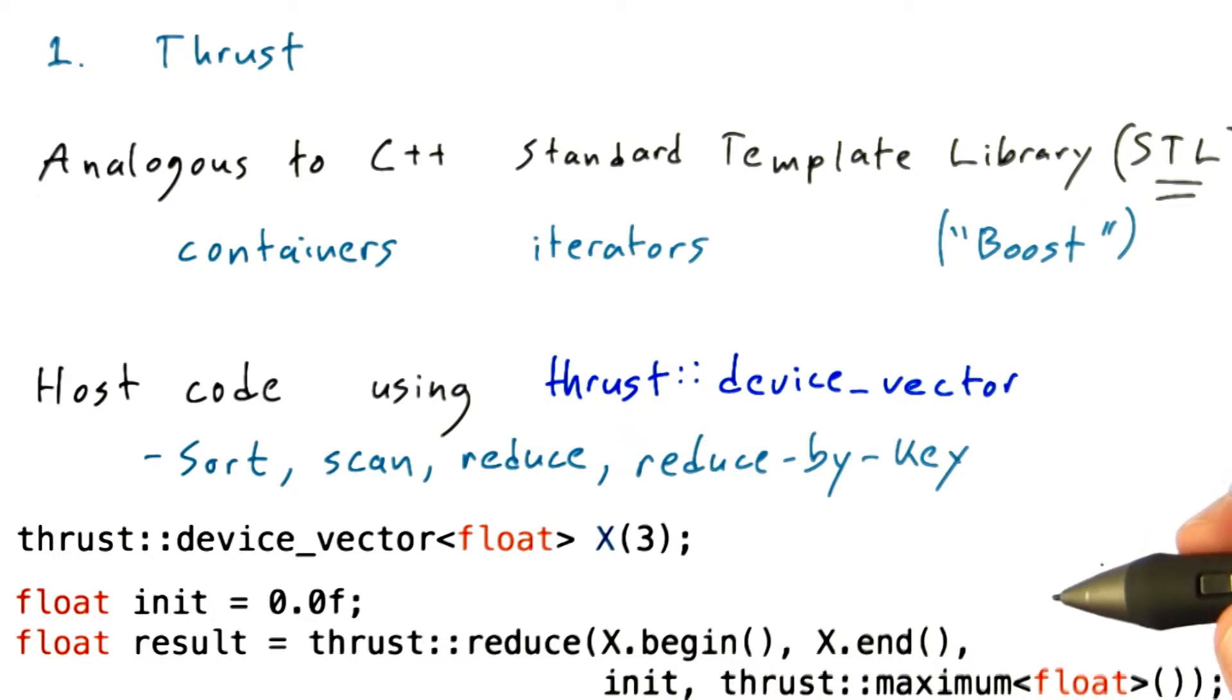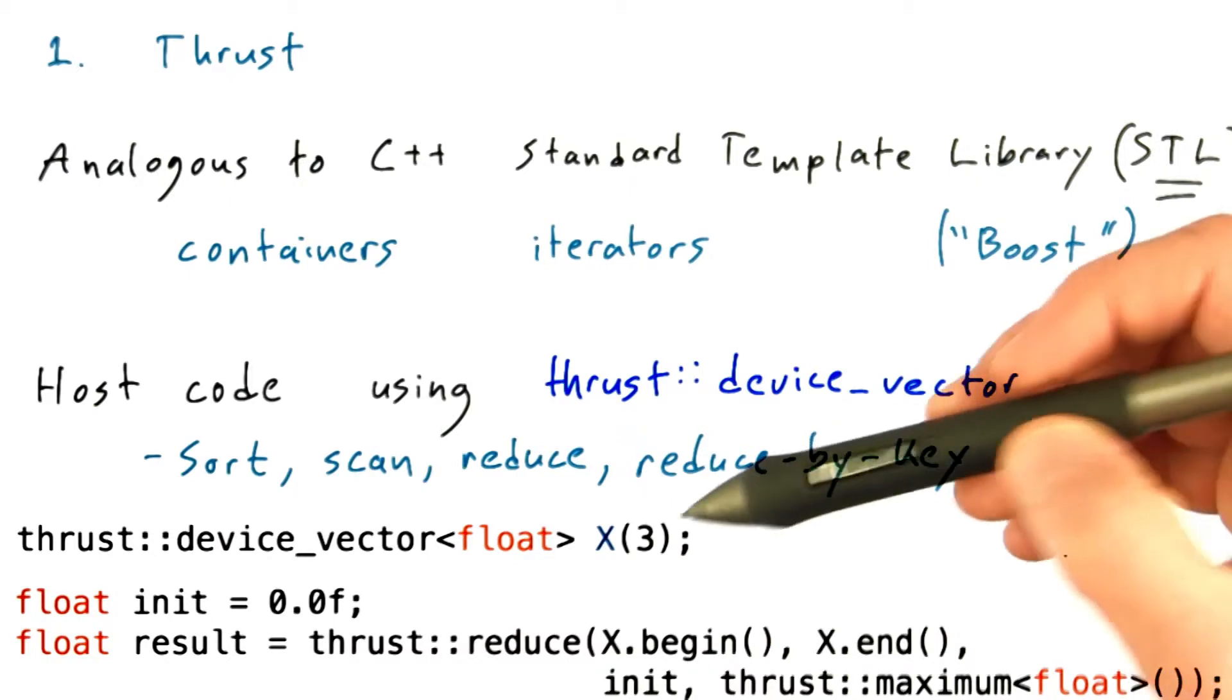Or you can do a reduction of a different sort. Rather than simply doing a sum reduce, we can pass in an operator to use, or a functor. In this case, we'll do thrust maximum. This reduction will give us the maximum number in this vector.